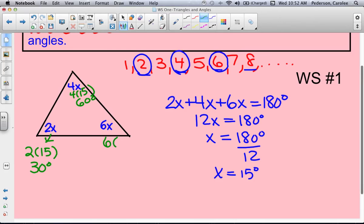And then 6 times 15 is 90 degrees. So there are my three angles: 30, 60, and 90.